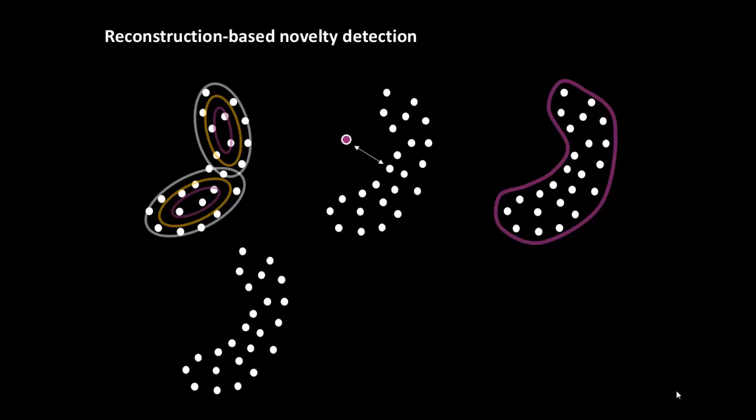Our fourth category contains the reconstruction-based methods. This class of methods involve training a regression model using the normal data. When new data are mapped using the trained model, the reconstruction error between the regression target and the observed value is related to the novelty score.